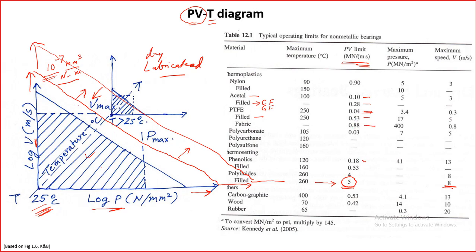Once PTFE is filled, the PV limit can increase by many orders of magnitude. Phenolics are another type of polymer — these are thermosets. Pure phenolics are not good, but filled phenolics are better. Along with PV value, we should also look at maximum pressure and maximum speed. For example, PTFE fabric can take up to 400 mega newton per meter squared. These additional pieces of information are necessary for bearing selection.